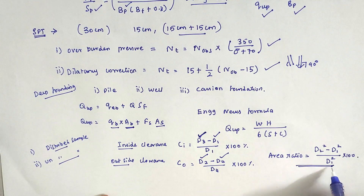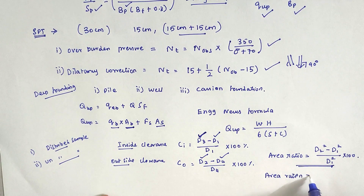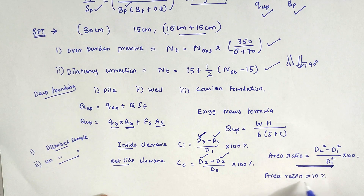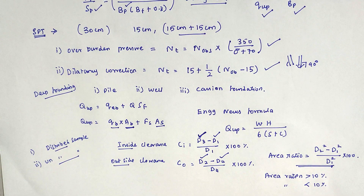When the area ratio is greater than 10%, it is called a disturbed sample. When the area ratio is less than 10%, it is called an undisturbed sample. These are all the quick revision points in foundation engineering. We will see more in the next video. Thank you.